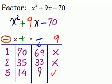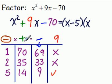So now we're done because we found the one we want. And we simply read off our scheme. So we have x minus 5, x plus 14. And we are done.